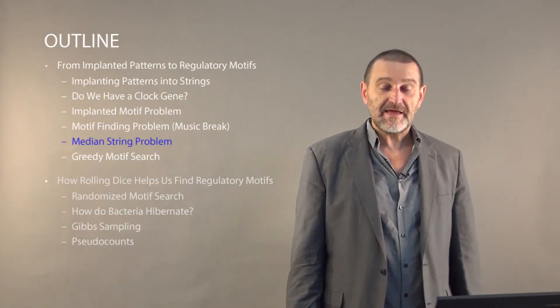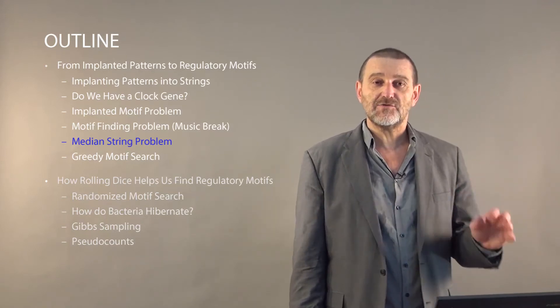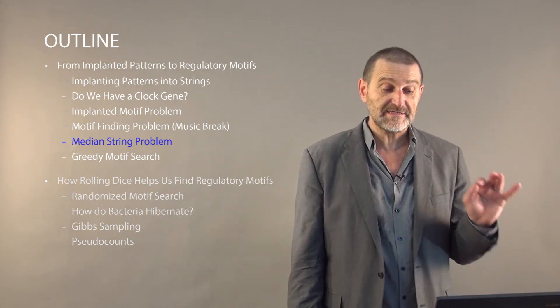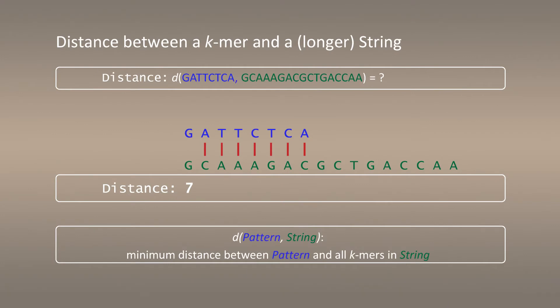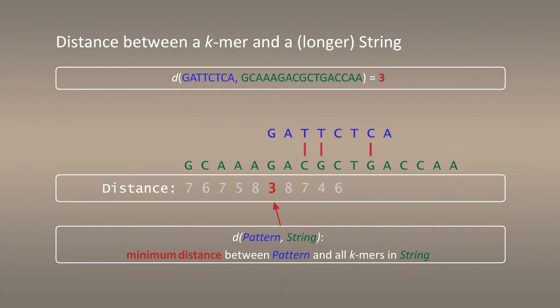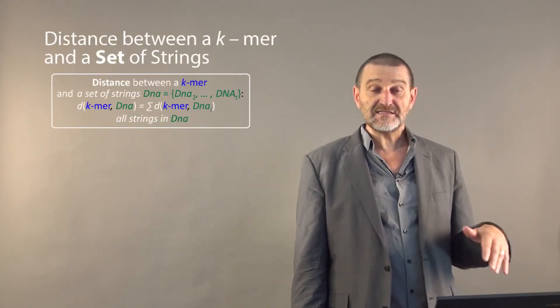I'm now introducing the median string problem. To define this problem, we need to define the notion of distance not only between k-mers of the same size but also a distance between a k-mer and a longer string. We start from a smaller string and compare it to the first k-mer in the text — distance in this case is seven — then we move further: distance six, and continue until the end of the string, returning to the place where the distance was minimal. In this way we find the k-mer within a longer string that is most close to our k-mer of interest, and this is the distance between a pattern and a string.